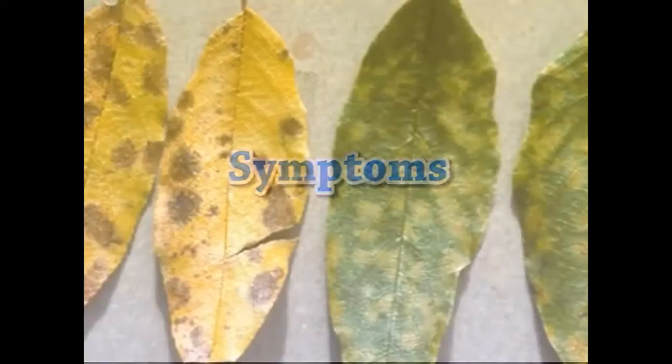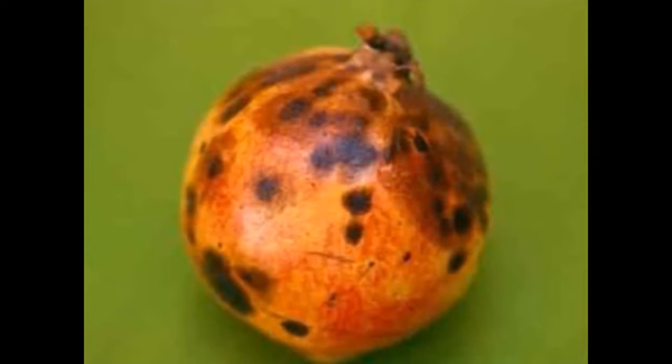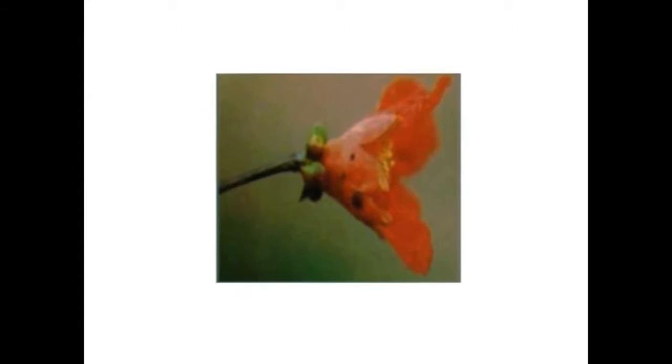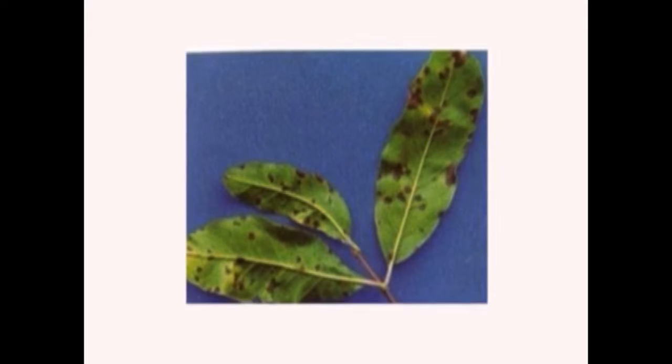First is the Cercospora leaf spot. It is caused by Cercospora punicae. Light brown spots appear on leaves and fruit which enlarge and coalesce to form large black patches on fruit. Black elliptical spots appear on twigs and become flattened and depressed with a raised margin. Infected twigs dry out and die.